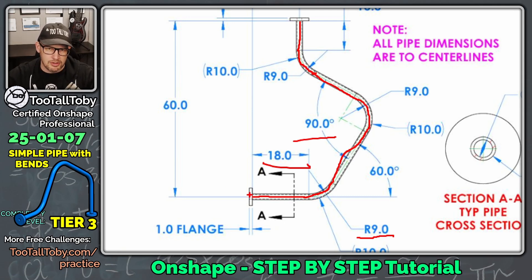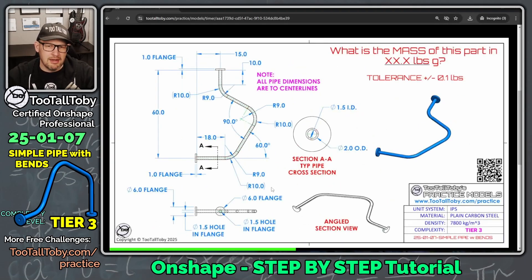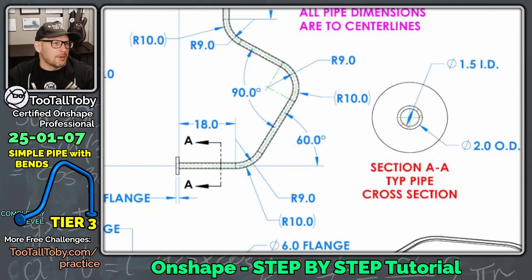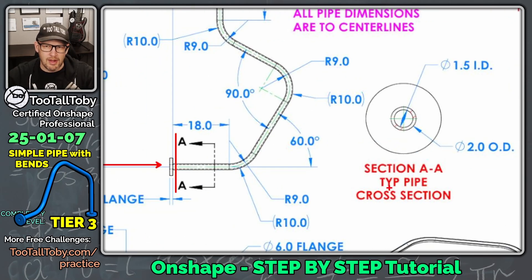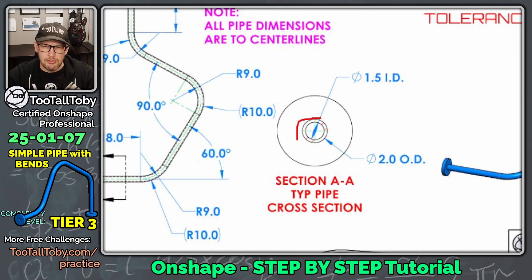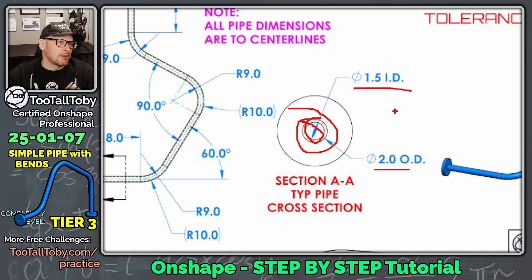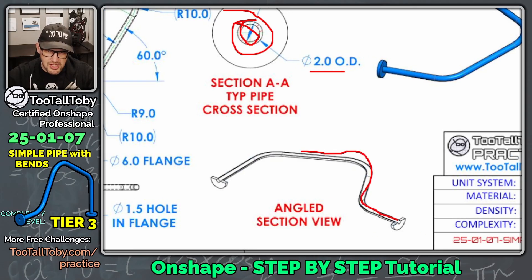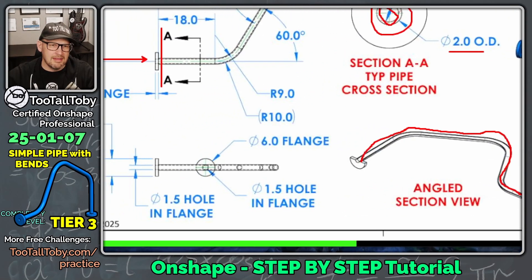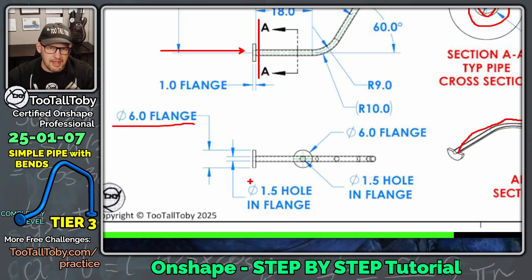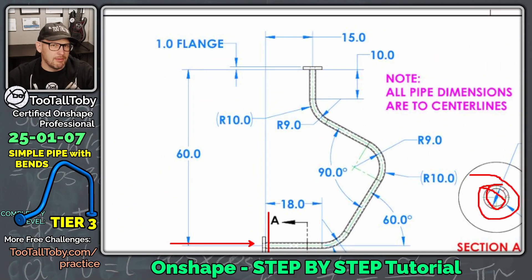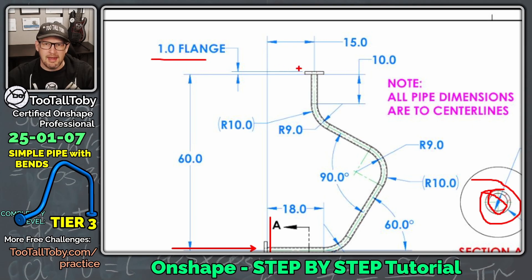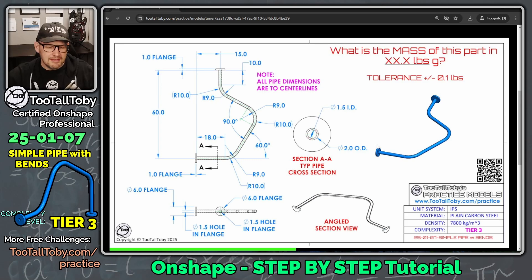We'll put the origin at the start of the sweep path. Then we'll create the sweep profile on the right plane — two circles: a 2-inch diameter outer circle and a 1.5-inch diameter inner circle. We'll sweep that tube profile along the path, then add 6-inch diameter flanges. Each flange is 1 inch thick with a 1.5-inch hole.